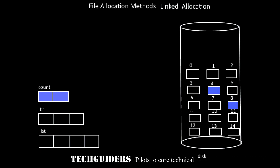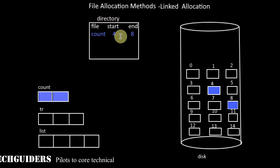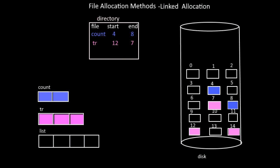And the directory contains a pointer to the first block of the file. Here the first file block of the file tr is located in disk block number 12, and the second file block is located in disk block 14, and the last file block is located in disk block number 7.